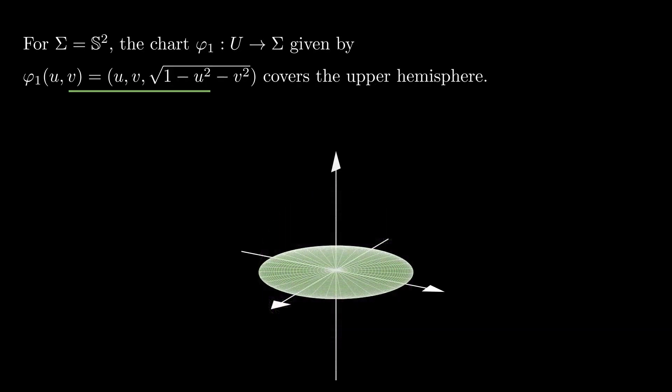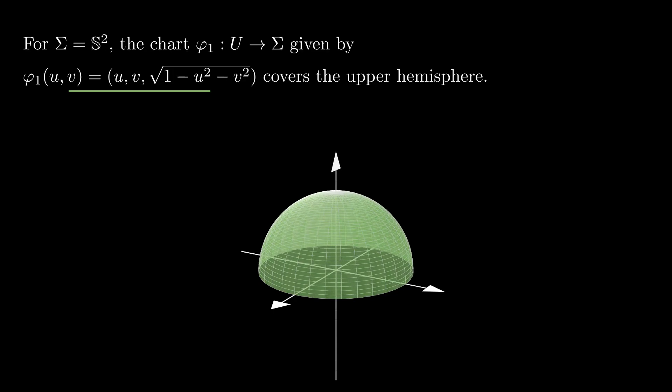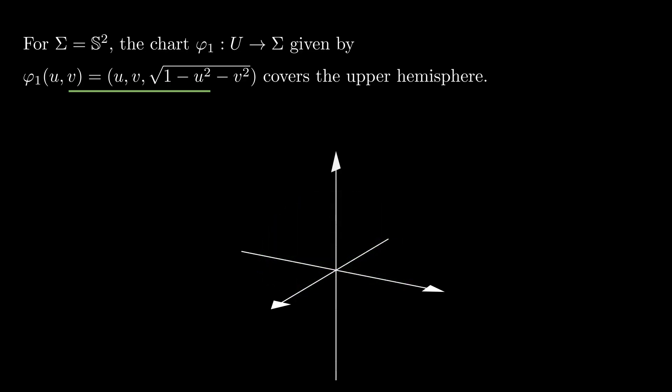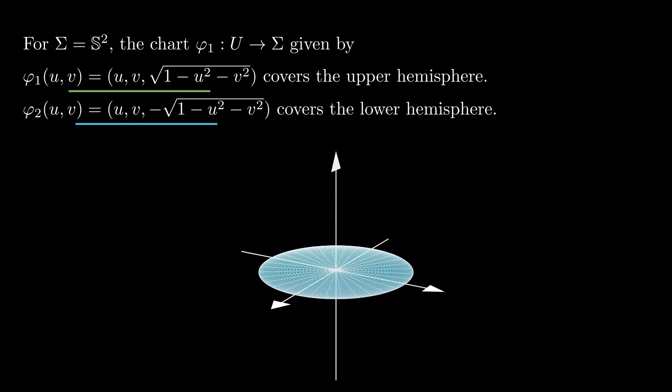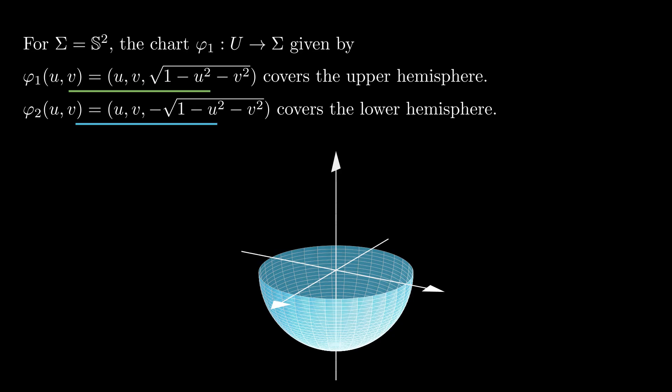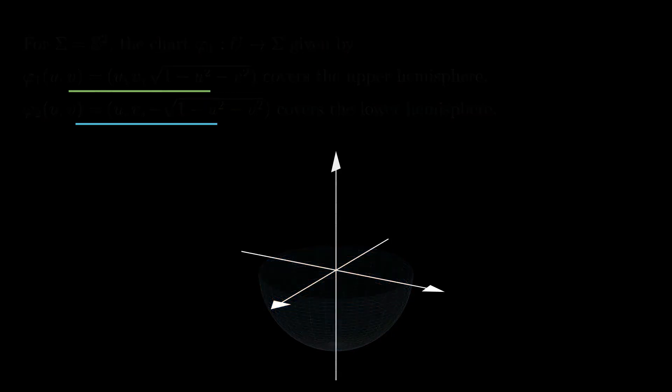If sigma is the unit sphere, then by taking u to be the open unit disk in R2, and phi to be given by (u, v, square root of 1 minus u squared minus v squared), we obtain a chart that covers the upper hemisphere of the sphere. Modifying phi by a minus sign in the third coordinate, we obtain a chart that covers the lower hemisphere.